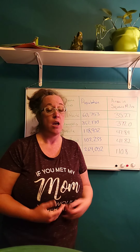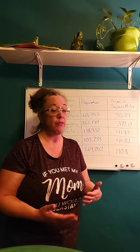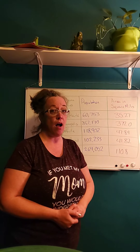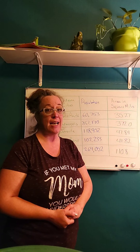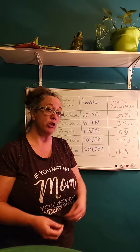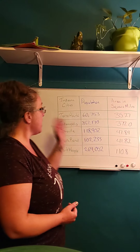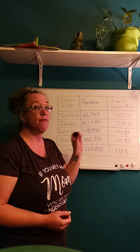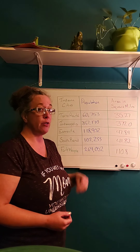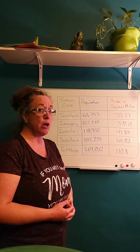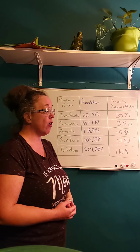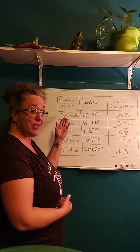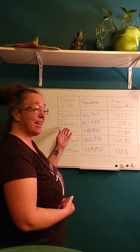When I organize information in a table, I have columns, and my columns all contain the same kind of information. Then I have my rows — my rows tell me the specific information for the different cities.